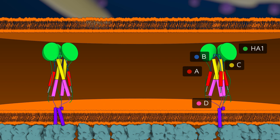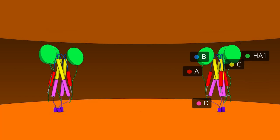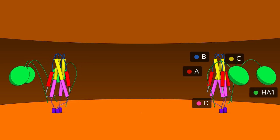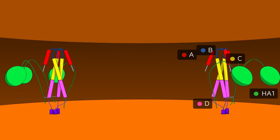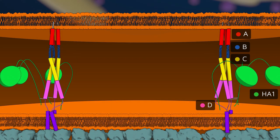HA1 moves away from HA2. Loop B, connecting helices A and C, rigidifies and becomes helicoidal. As a consequence, the fusion peptide is projected away from the viral membrane.